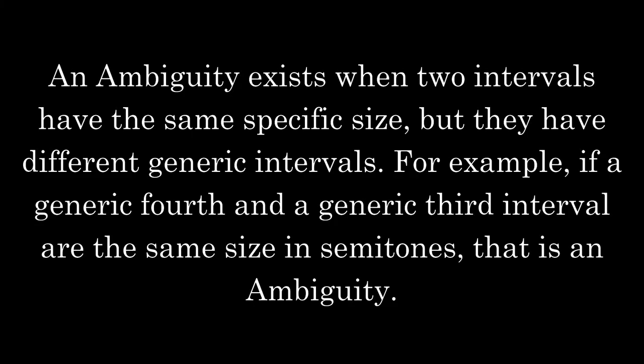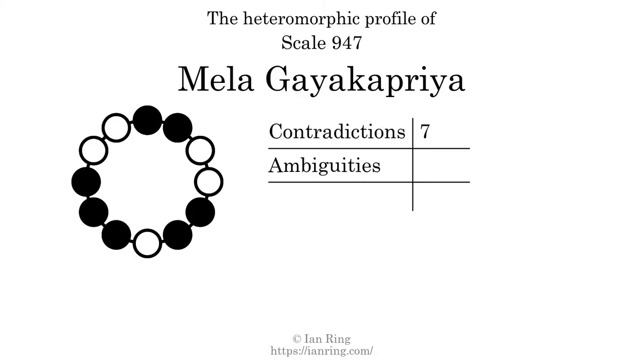An ambiguity exists when two intervals have the same specific size but they have different generic intervals — for example, if a generic fourth and a generic third interval are the same size in semitones. The number of ambiguities in this scale is 33.